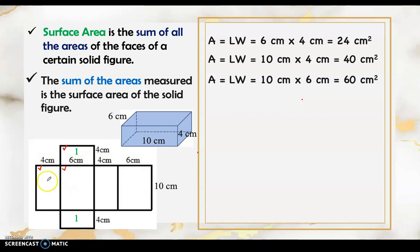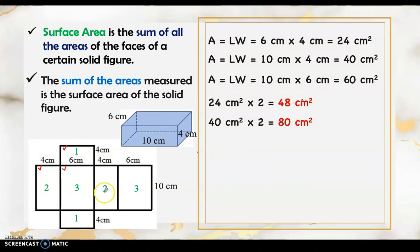So each pair of opposite faces are equal. What we're going to do is multiply the area of each face by two to get both areas of each pair. So 40 square centimeters times 2 gives 80 square centimeters for that pair. The 24 square centimeters times 2 gives 48 square centimeters for that pair. And 60 square centimeters times 2 gives 120 square centimeters for the last pair.